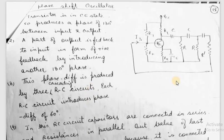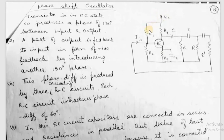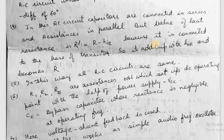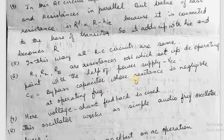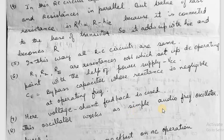As we discussed earlier for Hartley and Colpitt oscillators, here R1, R2, RE, CE, and VCC — all these resistors along with the power supply set the DC operating point, so they are biasing resistors. R1, R2, and RE are resistances which set up the DC operating point with the help of the power supply. CE is the bypass capacitor whose reactance is very small at the operating frequency. As a whole, we can see it is a voltage shunt feedback circuit used in this phase shift oscillator, and the frequency it produces is in the audio frequency range, so this oscillator works as a simple audio frequency oscillator.